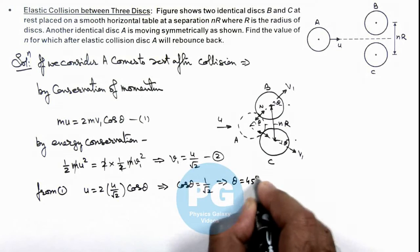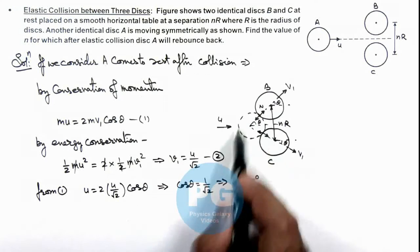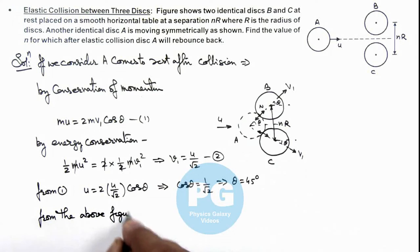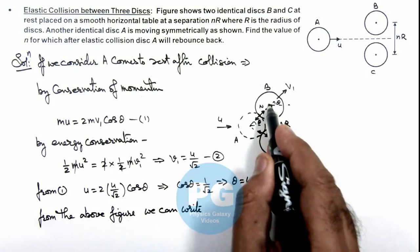So theta is 45 degrees. If theta is 45 degrees, then from this triangle we can write, from the above figure we can write.